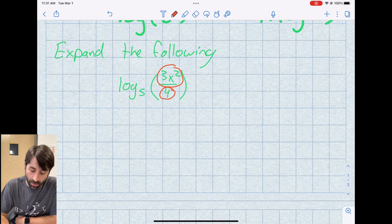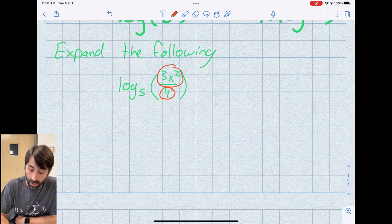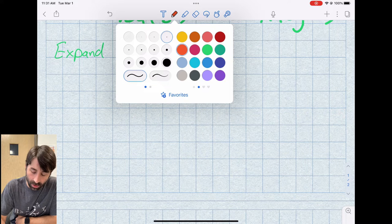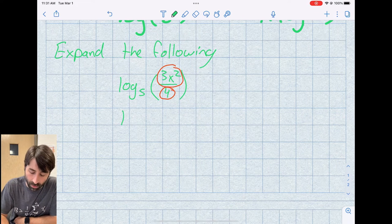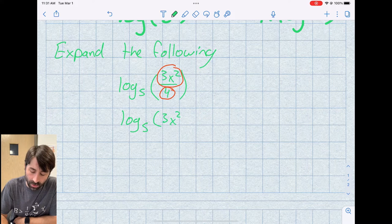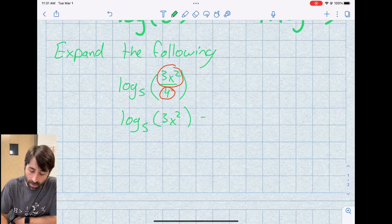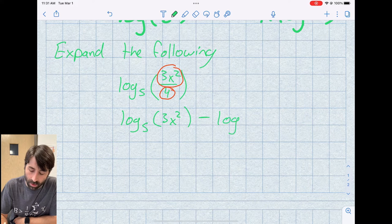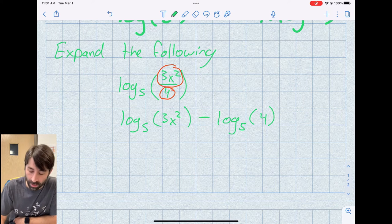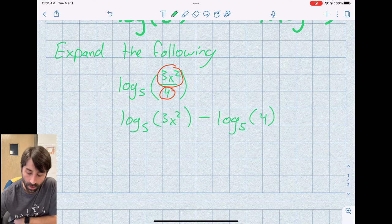I could even do this in a couple of steps, I can just apply the quotient rule first, if I wanted to, and go log base five of three x squared minus the log base five of four. Again, notice how my bases are the same.